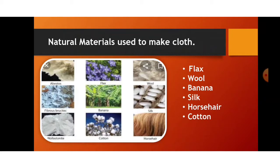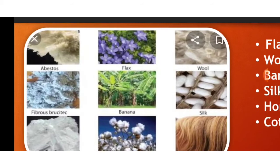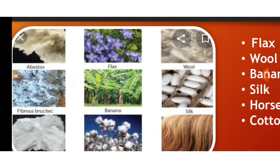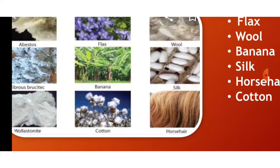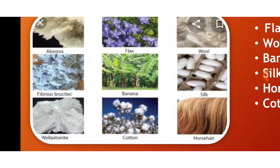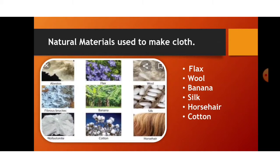These are some of the natural materials used to make clothes — the fibers of these materials are used to make clothes. Commonly known ones are: wool, which we get from sheep; silk, which we get from silkworm; horse hair; cotton; fiber from banana; and flax. So flax, wool, banana, silk, horse hair, and cotton — the fibers from these materials are used to make clothes.